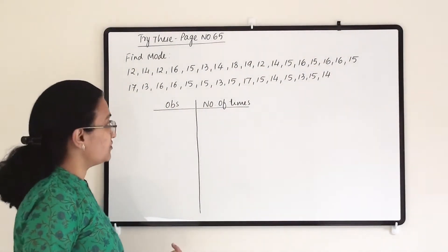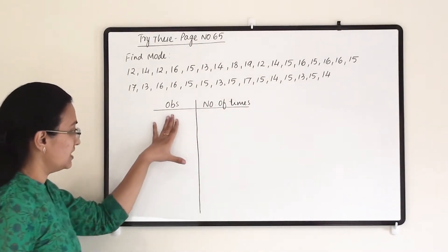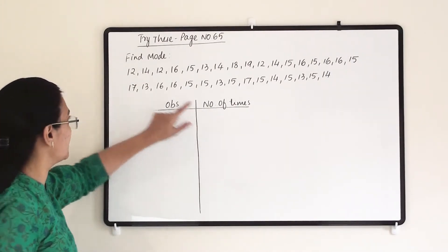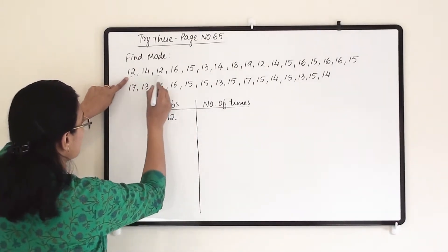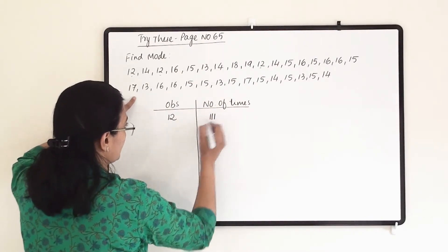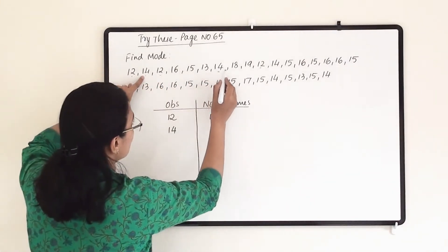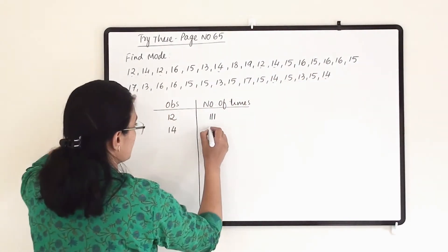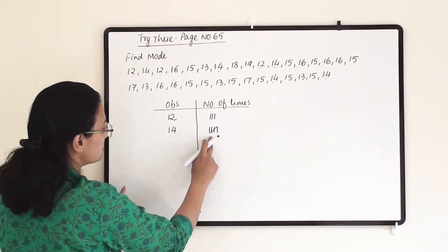Our next set: we have to find the mode for this data. You can make a table like this where we note down all observations and see how many times they appear. First, 12 — it is appearing three times. Then 14 — it is coming five times; we make four tally marks and cross the fifth. Then 16 — it is coming six times, so five marks and one more.